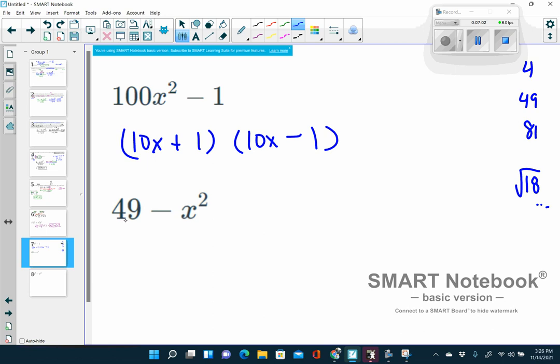Over here, very similar. Square root of 49 or what number multiplies to give me 49? 7 and 7. What numbers multiply to give me x squared? X and x. One of them is positive. The other one is negative. So if you FOIL it, you also get this back.